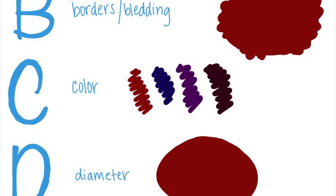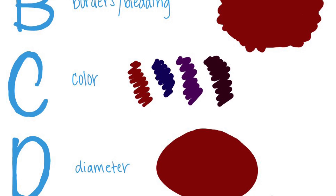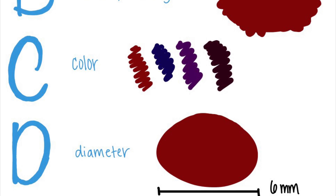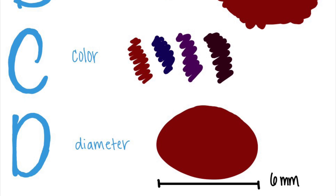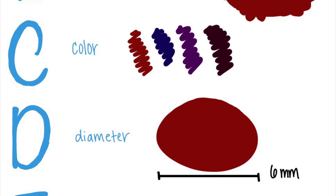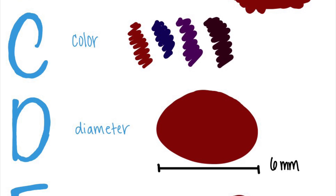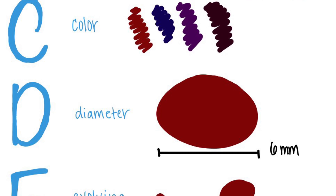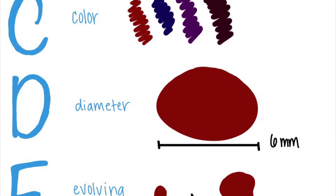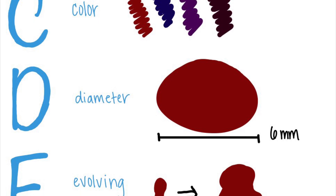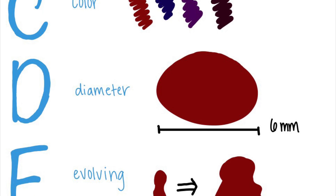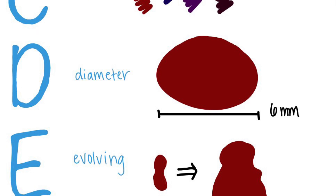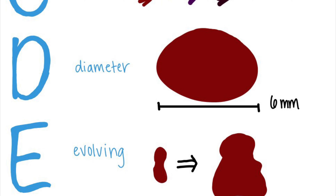D stands for diameter — anything more than 6 millimeters in diameter would be alarming. E stands for evolving — anything that is changing over time or looks different than it originally did would be concerning.